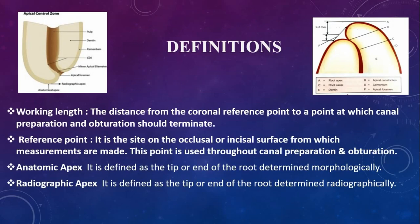Working length is defined as the distance from the coronal reference point to a point at which canal preparation and obturation should terminate. The reference point is a site on the occlusal or incisal surface from which measurements are made, used throughout canal preparation and obturation. The anatomic apex is the tip or end of the root determined morphologically, and the radiographic apex is the tip or end of the root determined radiographically.